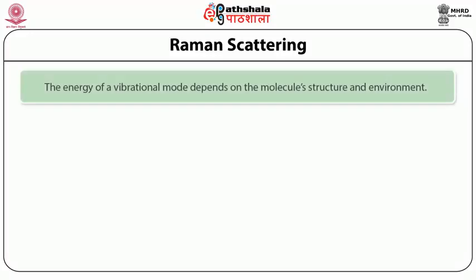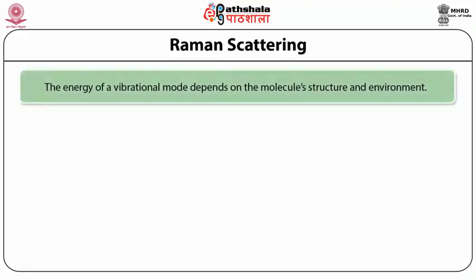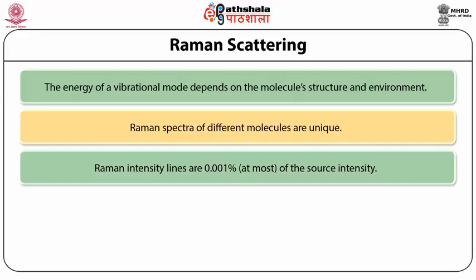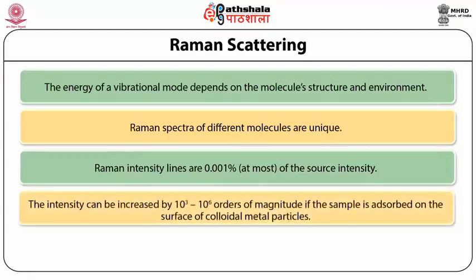The two situations arising with Raman scattering are: scattered photons have a lower energy, referred to as Stokes scattering. The energy of a vibrational mode depends on the molecule's structure and environment. Raman spectra of different molecules are unique. Raman intensity lines are 0.001 percent at most of the source intensity, but the intensity can be increased by 10³ to 10⁶ orders of magnitude if the sample is adsorbed on the surface of colloidal metal particles.